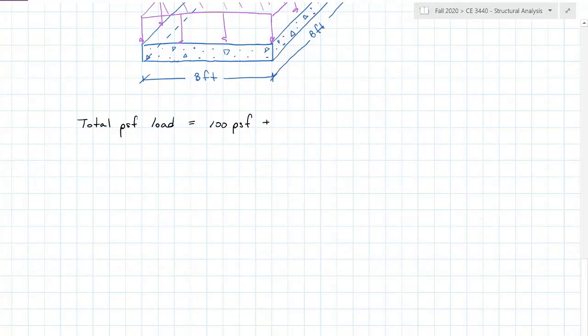With this information I can calculate the total pounds per square foot load. We have 100 PSF for the live load plus six inches times 12 PSF per inch, which gives us 172 pounds per square foot of load over our slab. It doesn't want the load per square foot, it wants the resultant force.